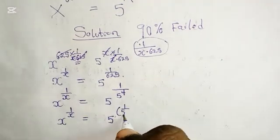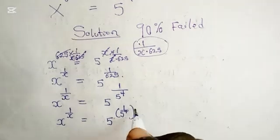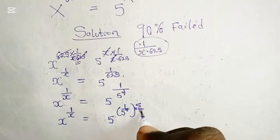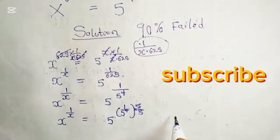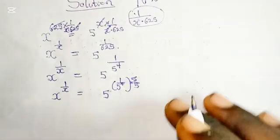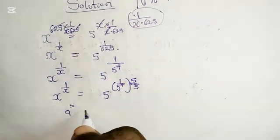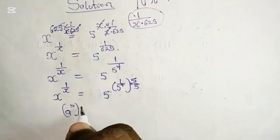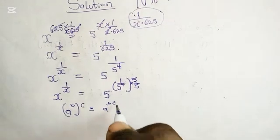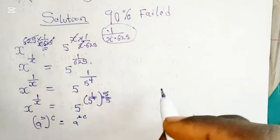Now we know that 5 multiplied by the power of 5 divided by 5 — 5 divided by 5 gives us 1. I want us to recall this using the exponent property which says: when you have a raised to the power of b, in bracket with the power of c, this is equal to a raised to the power of b times c.